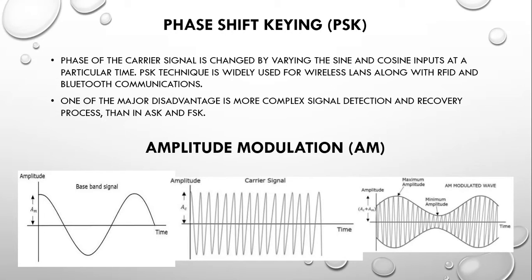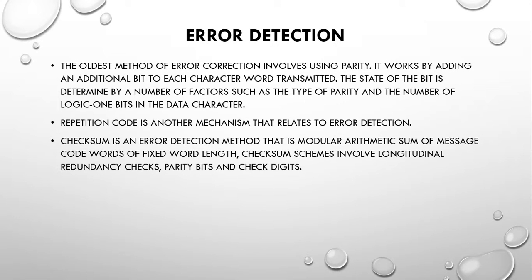Amplitude modulation (AM) varies the amplitude of the carrier signal in accordance with the instantaneous amplitude of the modulating signal.